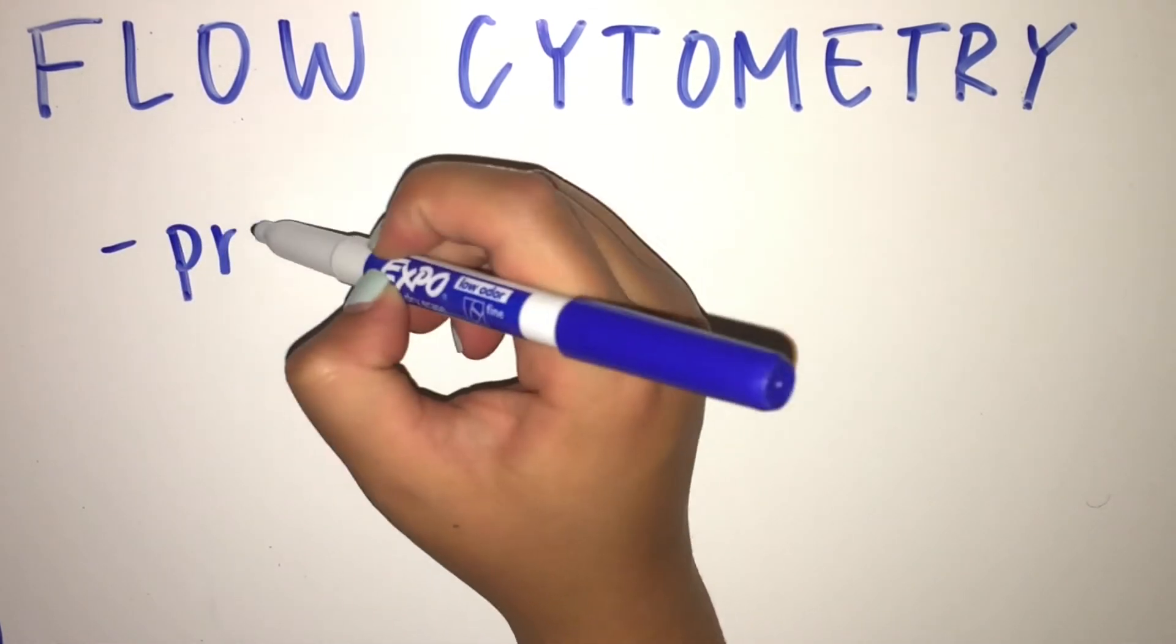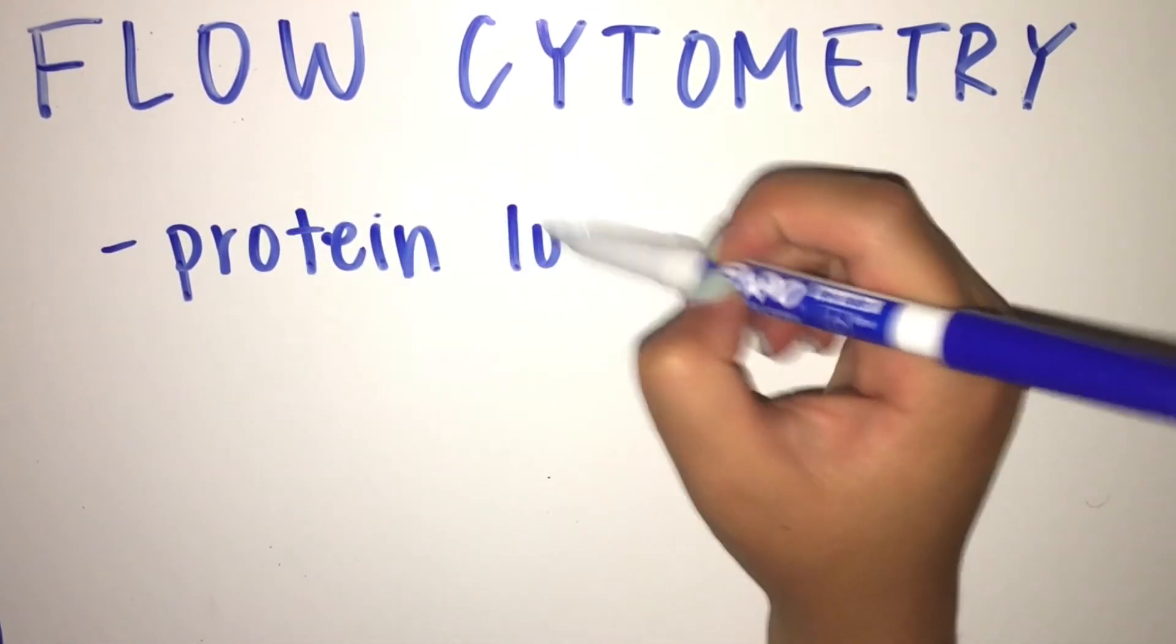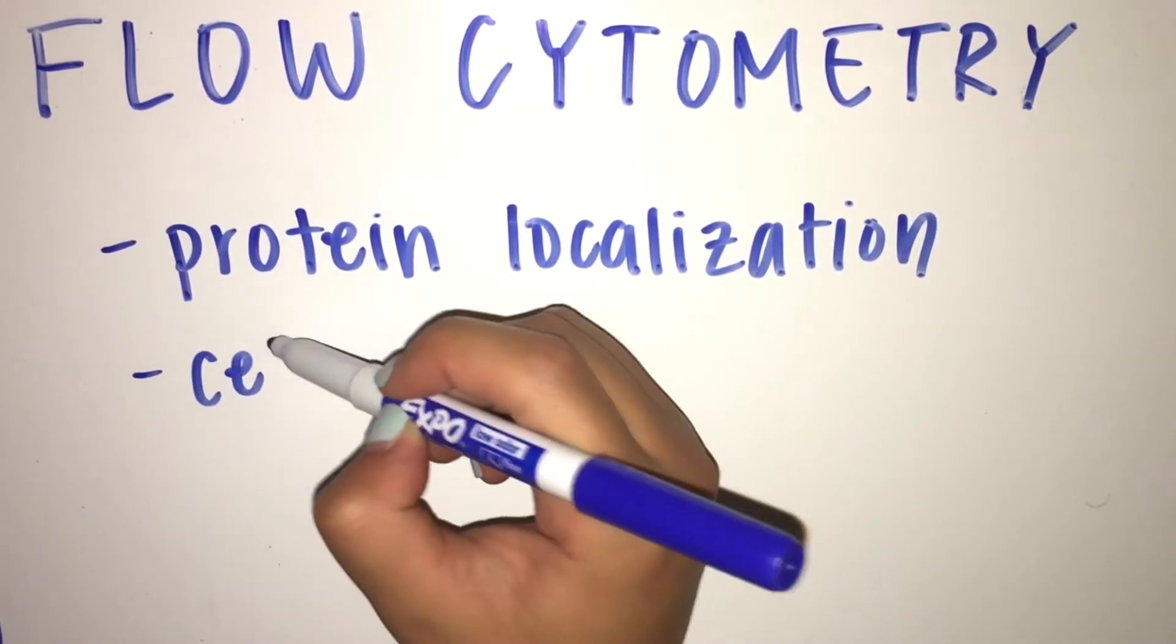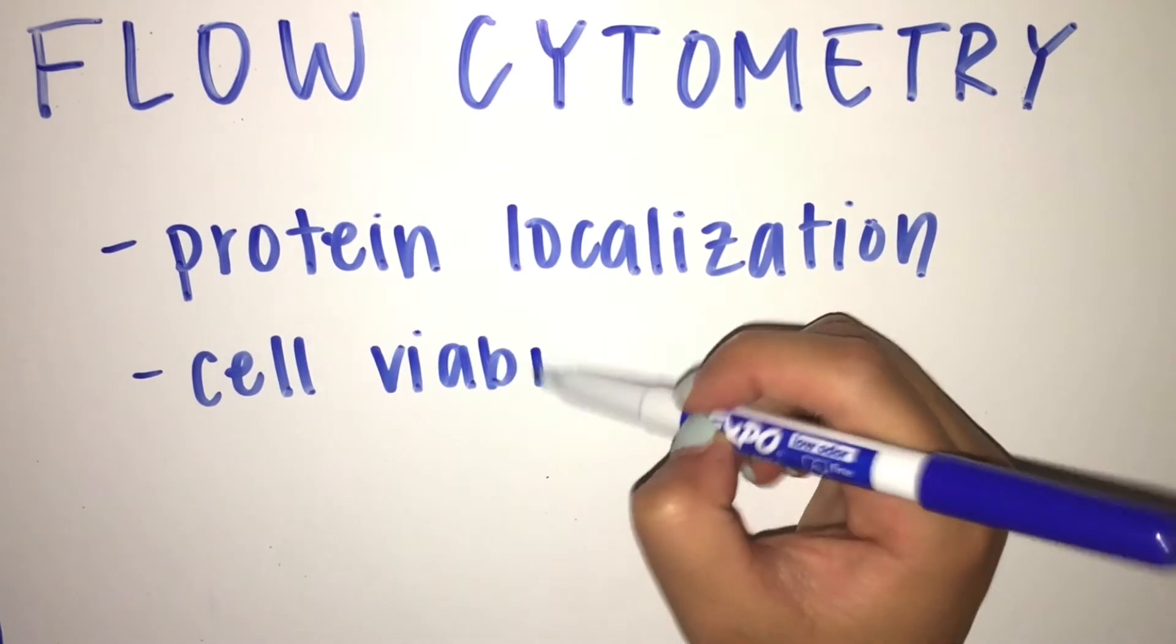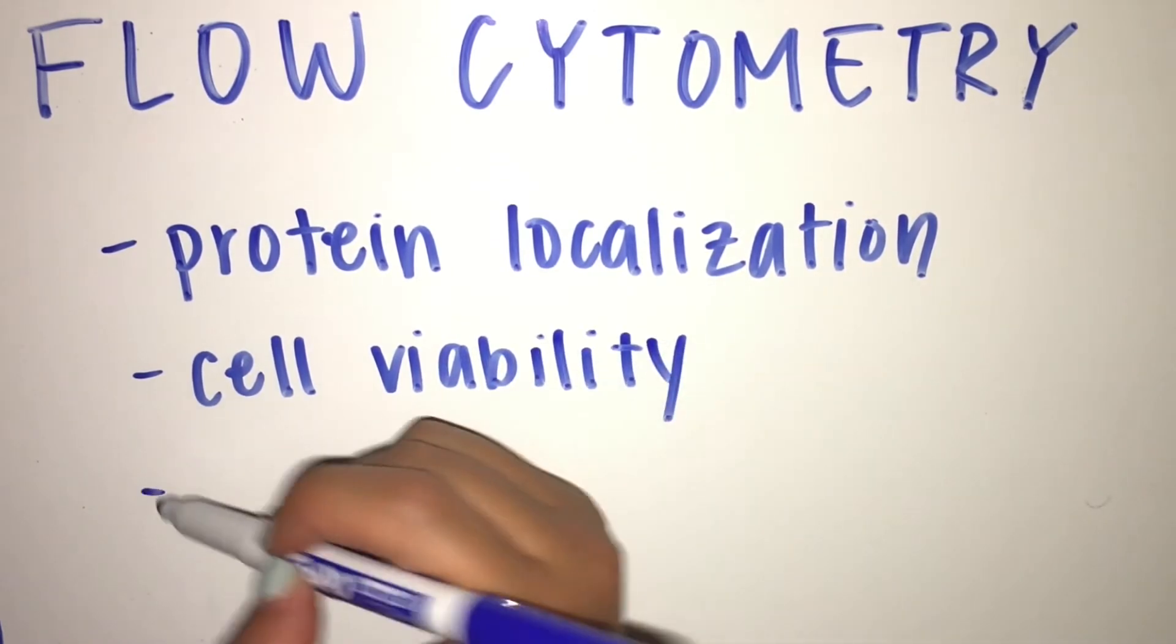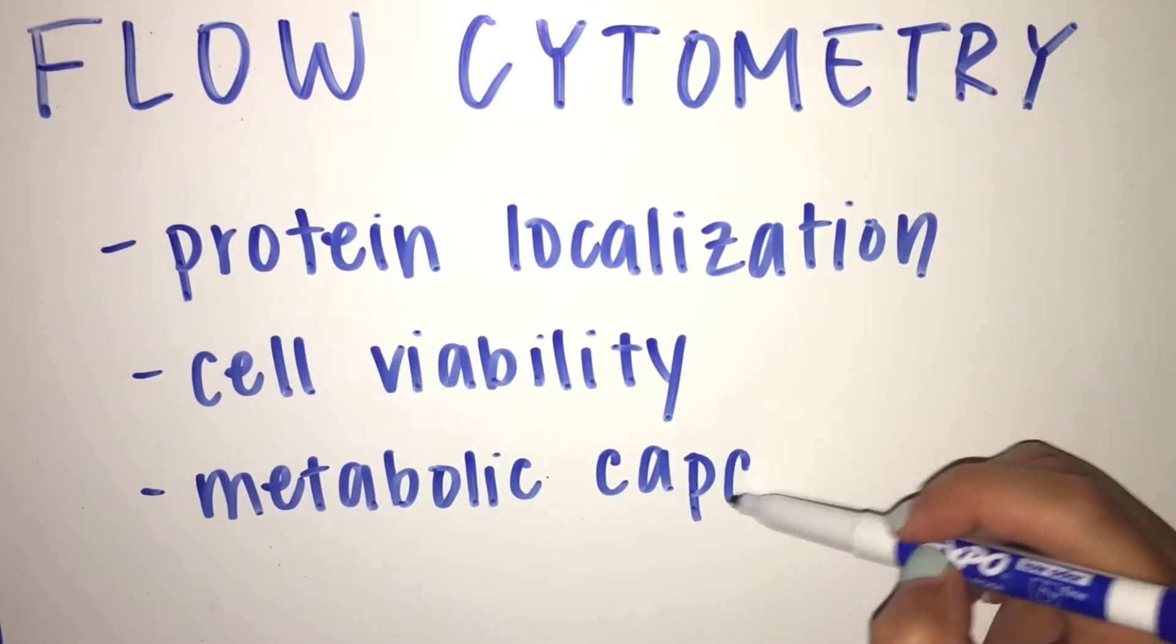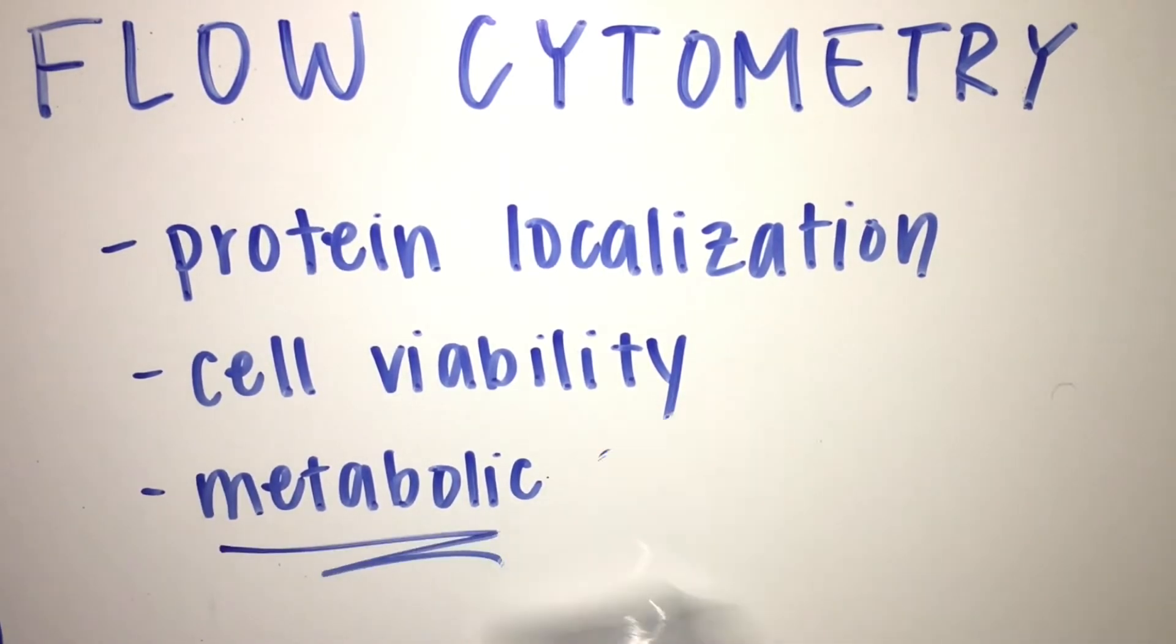Although it measures the general parameter of concentration, flow cytometry can tell us information about protein localization, based on the amount of protein in an isolated region, cell viability, based on the proportion of intact versus degraded DNA, and metabolic capacity, based on the number of mitochondria in a cell.